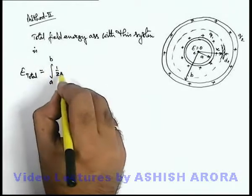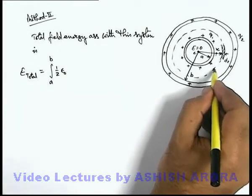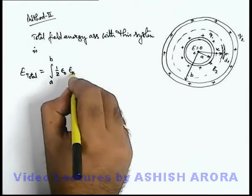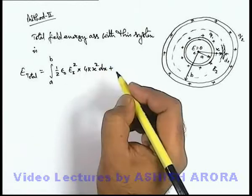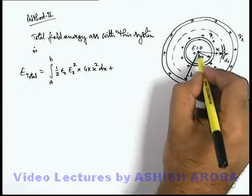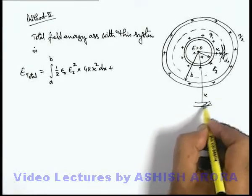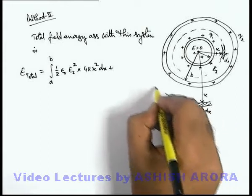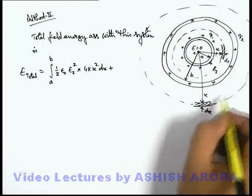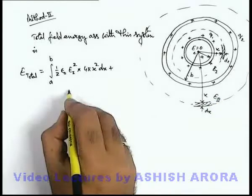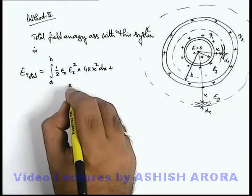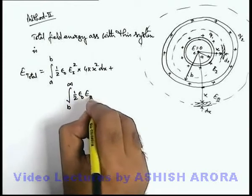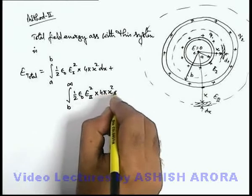E_total can be calculated as the field energy from radii a to b: integration from a to b of (1/2)·ε₀·E1²·4πx²·dx, plus the integration in the outer region from b to infinity of (1/2)·ε₀·E2²·4πx²·dx, where E1 is the electric field in the inner region and E2 is the electric field in the outer region.